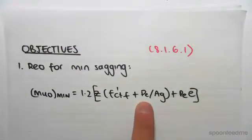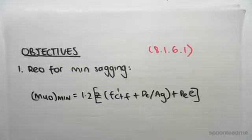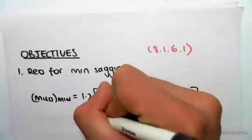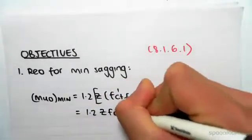This P subscript E term is any pre-stressing. Now, in our structure, we're not going to be having any pre-stressing, so that's straightaway we're going to go to zero. So we're going to be left with 1.2 outside of Z*FCT.f'.